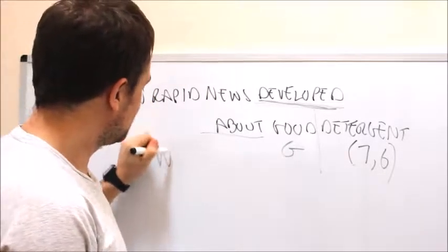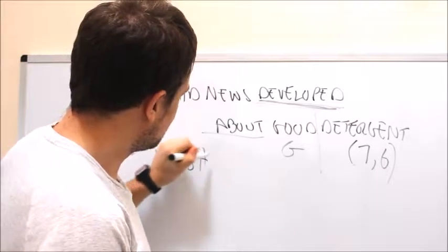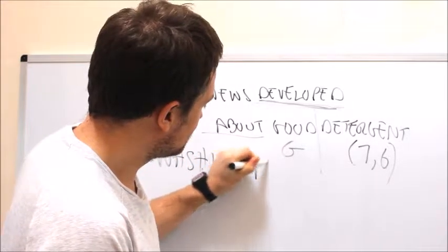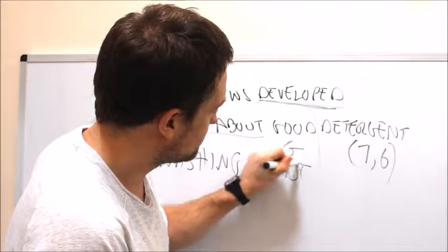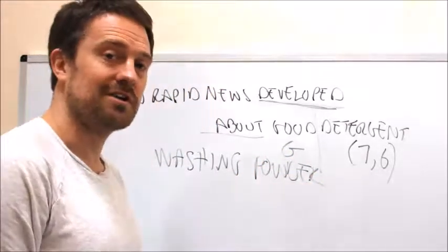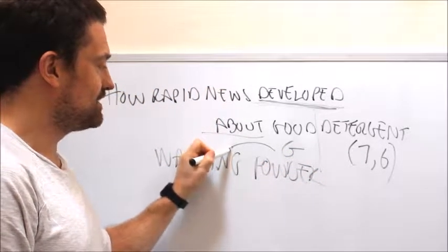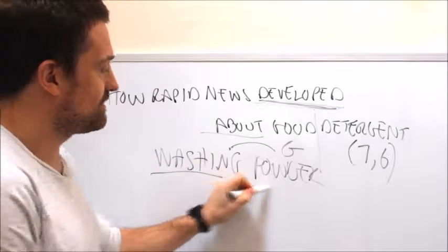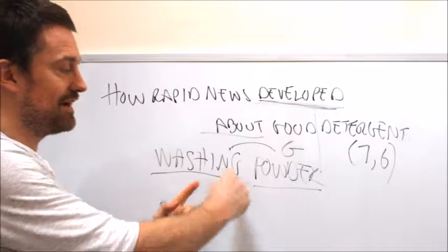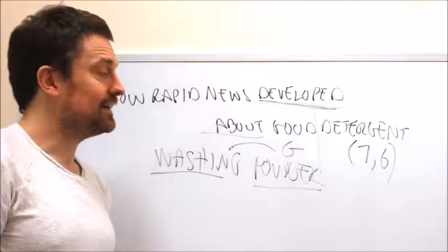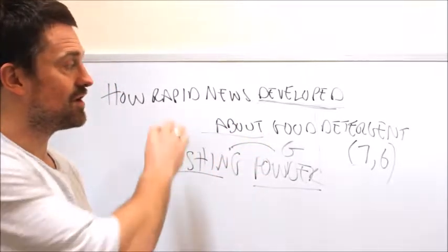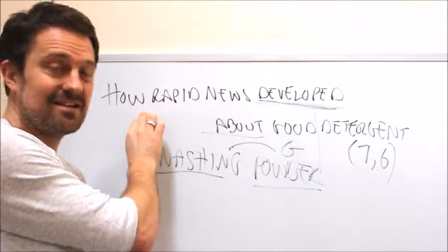And you end up, eventually depending on how quick you are with anagrams, with washing powder. There's your G, everything else - how rapid news - is developed around the G. And that's a really simple combination, so you've got a bit of an anagram, you've counted your letters, you've realized you're one short and you go looking for the other one.